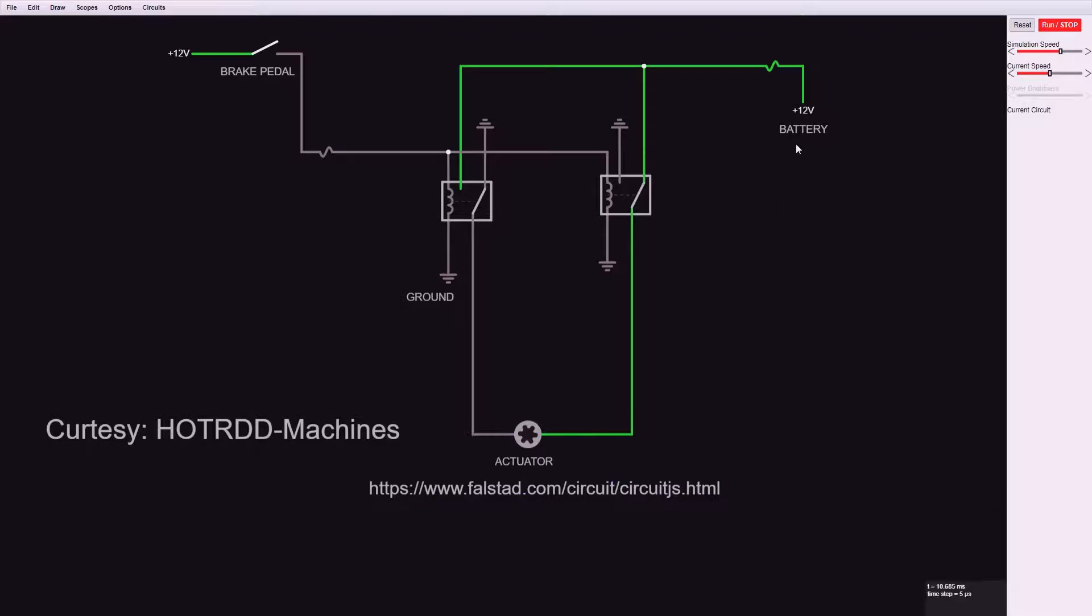What you're going to see here is power is going to travel down on the right-hand side through the actuator and back out. When we press the brake pedal, the current is going to switch directions and come from the left side and go out the right side, which changes the direction of the actuator. If we run this simulation, you can see current coming in the right side, moving over to the left side. As soon as I hit the brake pedal, it switches directions.